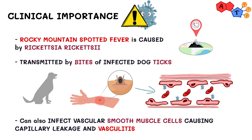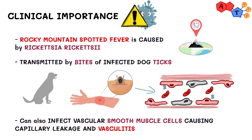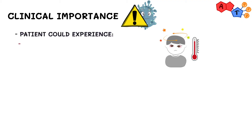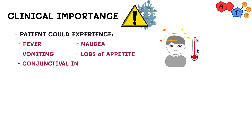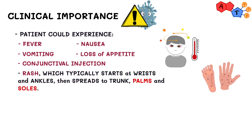Rickettsia species enter the target cells, multiply by binary fission in the cytosol, and damage heavily parasitized cells directly. During the initial stages of the disease, the patient could experience fever, nausea, vomiting, loss of appetite, conjunctival injection (which means red eyes), and a rash which typically starts at the wrists and ankles, and then spreads to the trunk, palms, and soles.